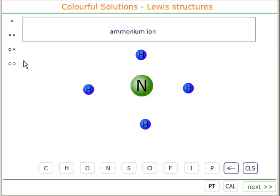That means it can provide one electron to share with a hydrogen. Another electron to share with a hydrogen. And another electron to share with a hydrogen. It's now used up three of its five electrons.